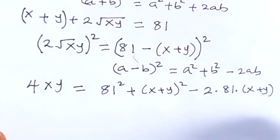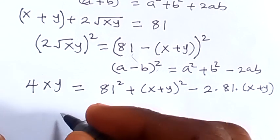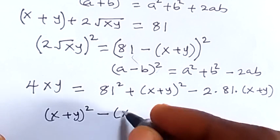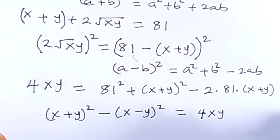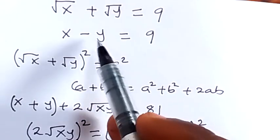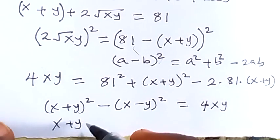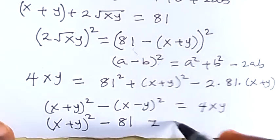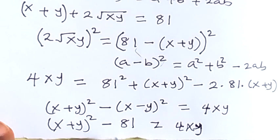Now let's write 4xy in another way: 4xy can be written as (x + y)² minus (x - y)². And don't forget that x minus y is equal to 9, as recalled from the second equation. So we can write this as (x + y)² minus 9², which is 81. So 4xy equals (x + y)² minus 81.